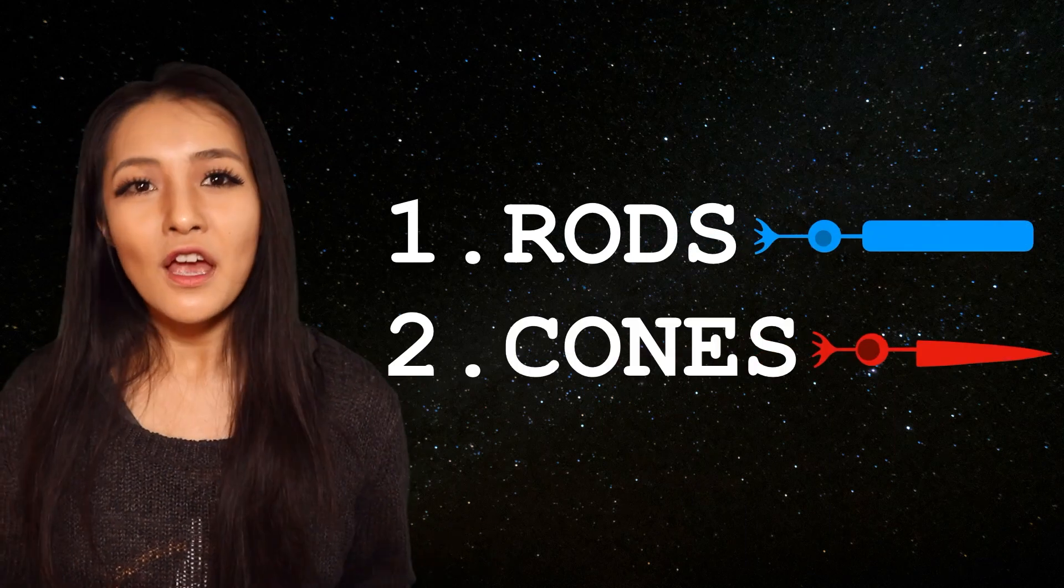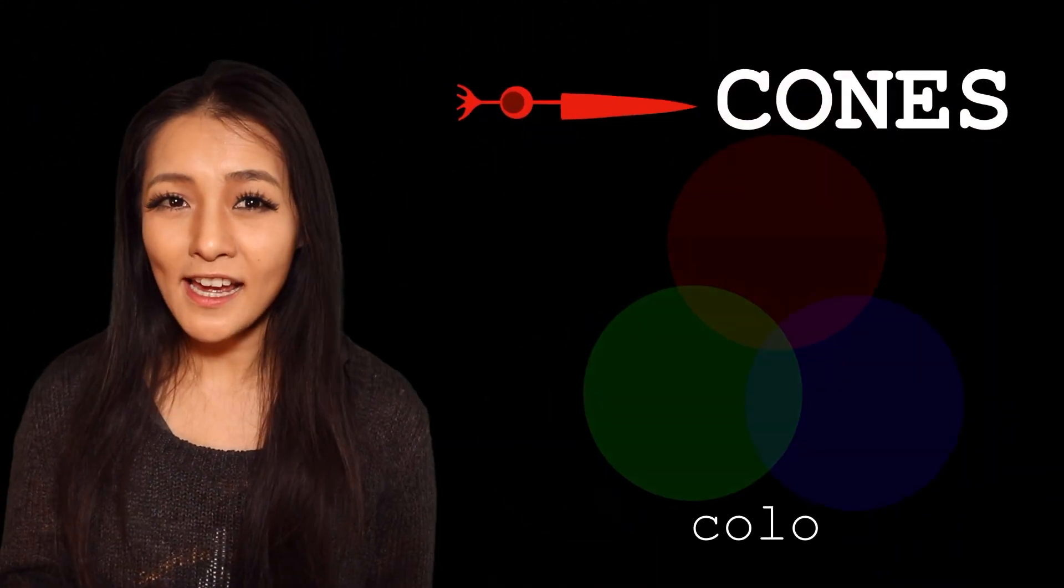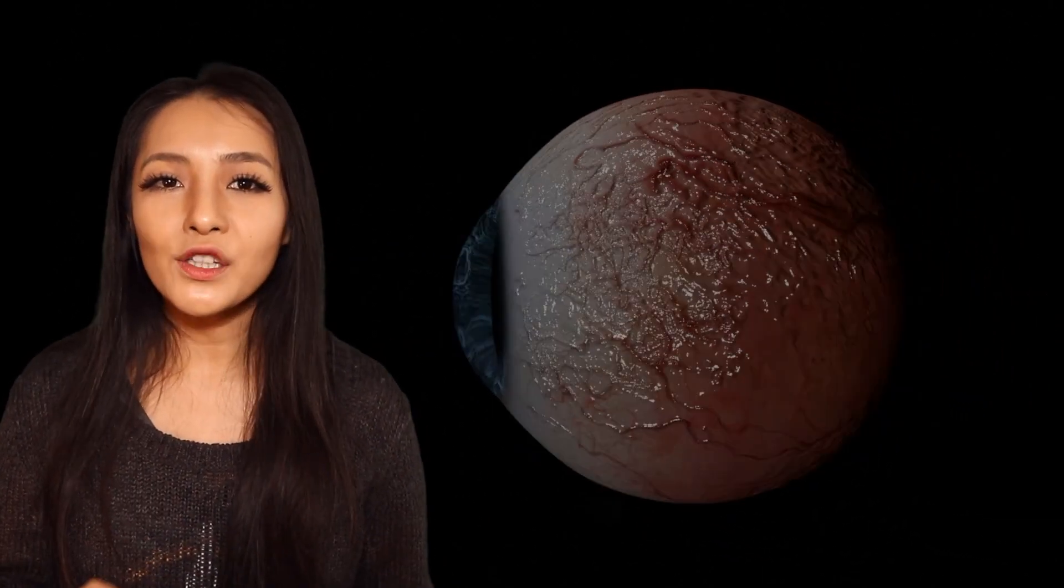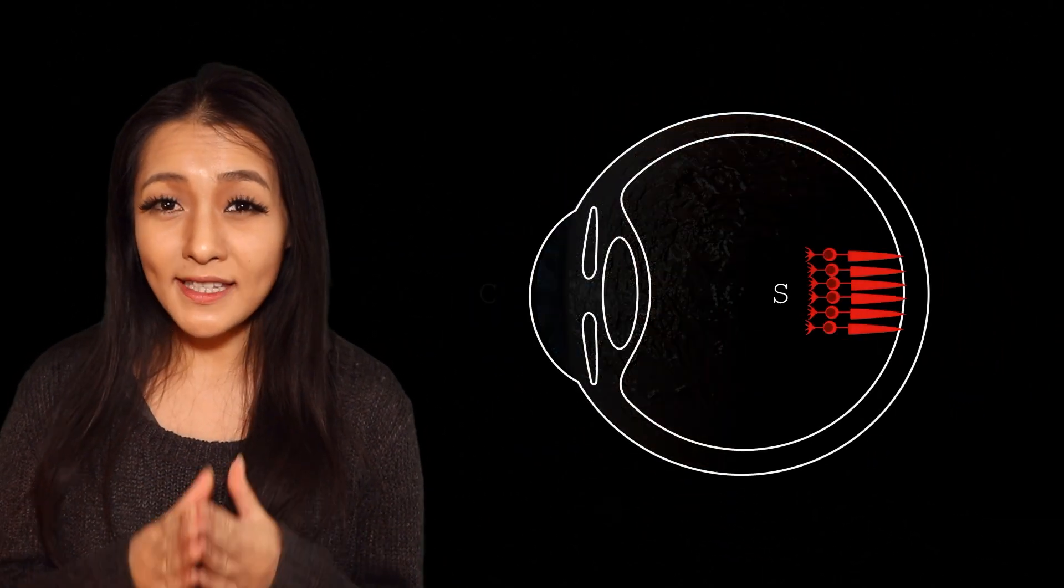Averted vision is a technique where instead of looking straight at an object, you look off to one side to expose the most sensitive part of your eye, so that you can see much fainter objects. The retina of your eye has two types of cells that detect light, rods and cones. Cones detect colour and help you see finer details, they're found near the centre of your retina. This is why you look directly at objects you want to see well.